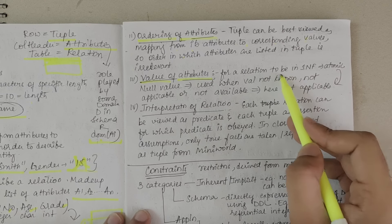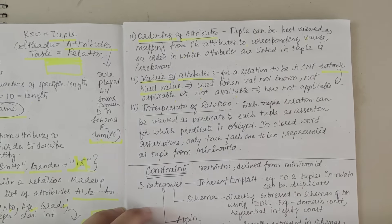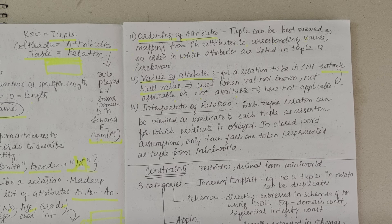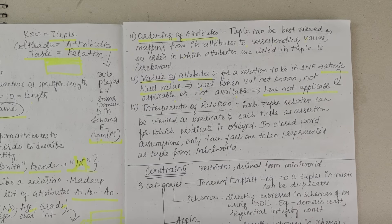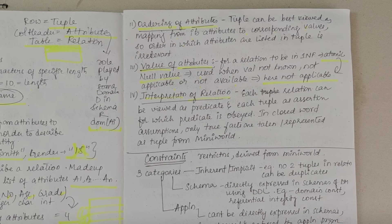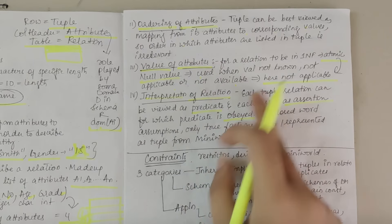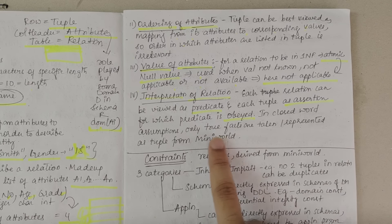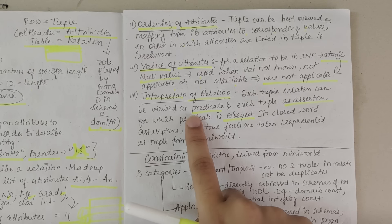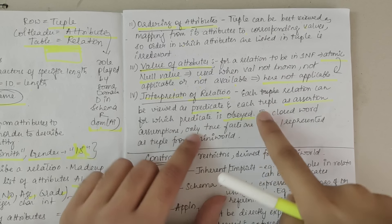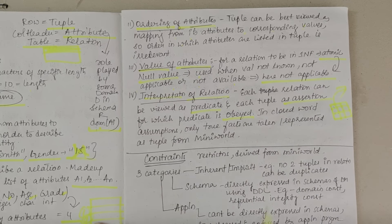The second characteristic is ordering of attributes. Even attributes need to be ordered in a specific way because of mapping from attributes to corresponding values. Third is the value of attributes — for a relation to be in first normal form, values must be atomic. Null values are used when a value is not known, not applicable, or not available. The fourth characteristic is interpretation of relation — each relation can be viewed as a predicate and each tuple as an assertion for which the predicate is obeyed. Only facts are taken as tuples.